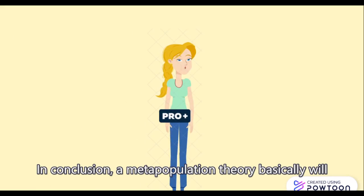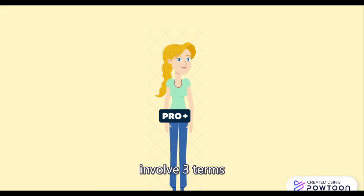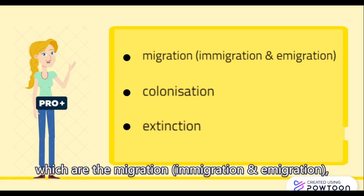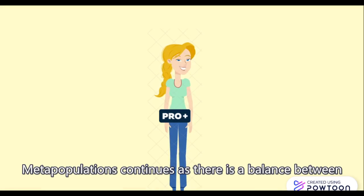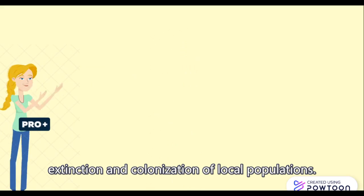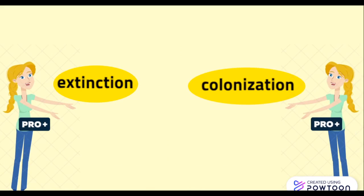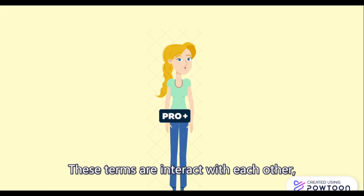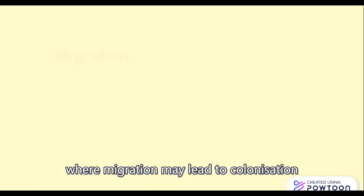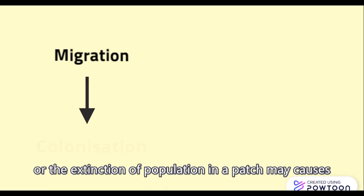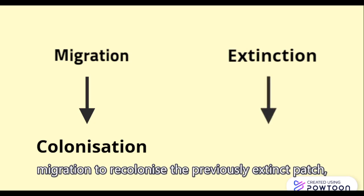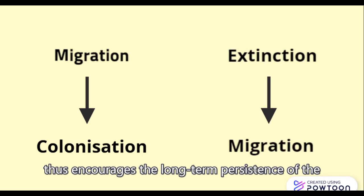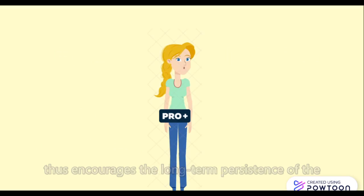In conclusion, a metapopulation theory basically involves three terms: migration, colonisation, and extinction. Metapopulation continues as long as there is a balance between extinction and colonisation of local populations. These terms interact with each other, where migration may lead to colonisation, or the extinction of a population in a patch may cause migration to recolonise the previously extinct patch. Thus, this encourages the long-term persistence of population networks.